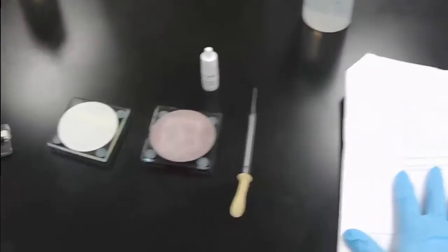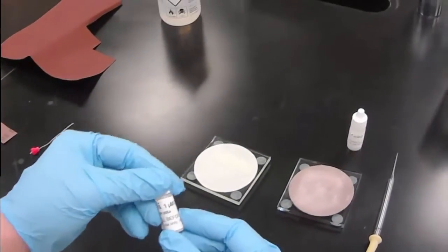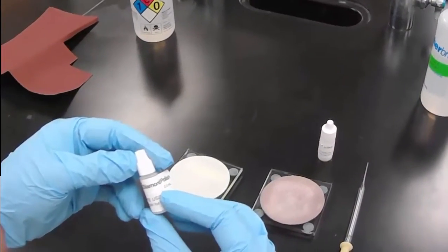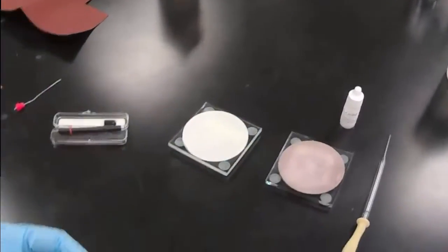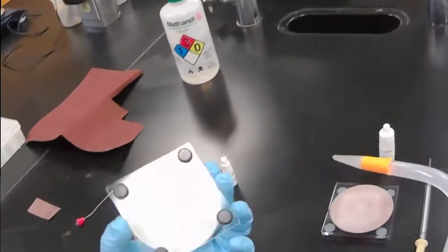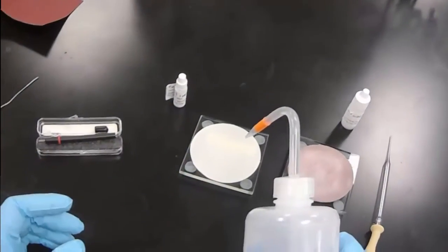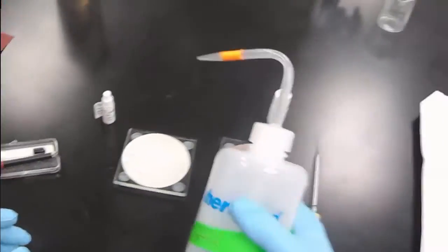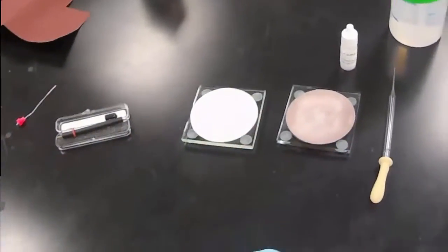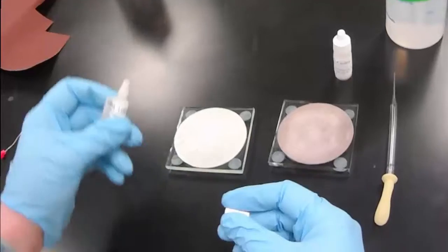We're going to follow this procedure in this handout here that came with this polishing kit. We're going to first use one micrometer diamond polish, and we get the nylon pad that's labeled for the diamond wet first with water, millipore water. Then we add just a couple drops of the diamond polish.